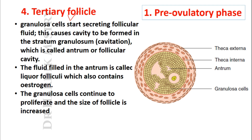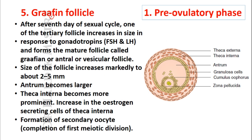In the tertiary follicle, granulosa cells start secreting follicular fluid. This causes a cavity to form in the stratum granulosa called the antrum or follicular cavity. The fluid filling the antrum is called liquor folliculi, which also contains estrogen. The granulosa cells continue to proliferate, increasing the number, size, and overall size of the follicle.